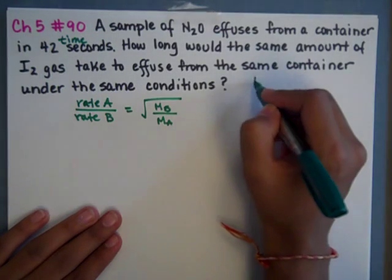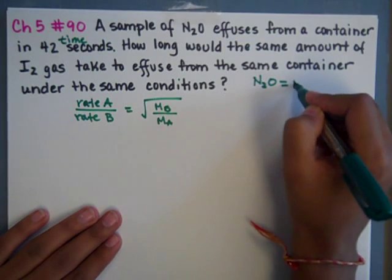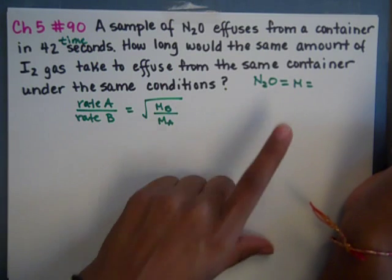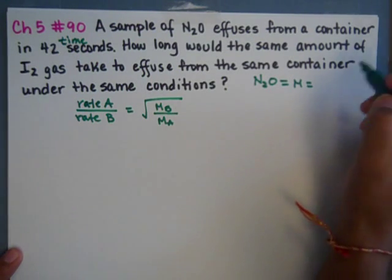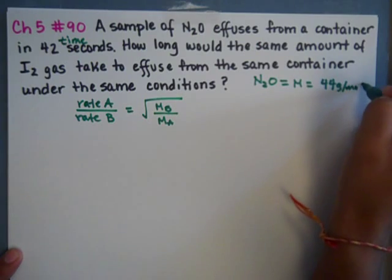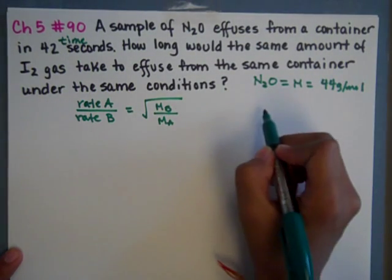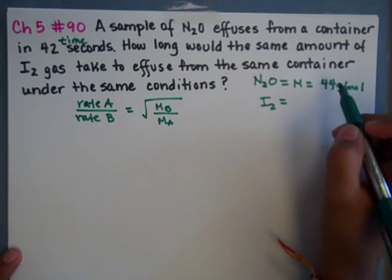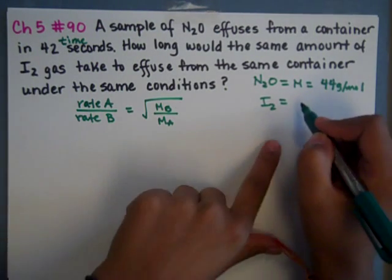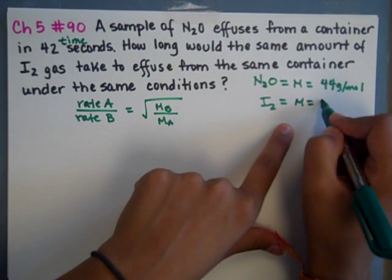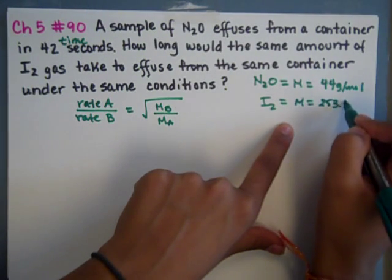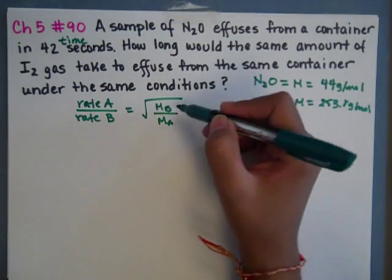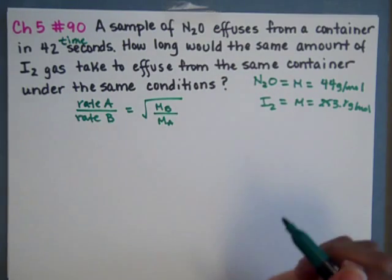So we know N2O, the molar mass equals two nitrogens and an oxygen, which is 44 grams per mole. Then we know that I2, the iodine, is the same thing. We multiply by two, and we get the molar mass equal to 253.8 grams per mole. So we have the molar masses, so that is what's going to go under the square root over here.